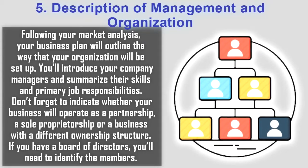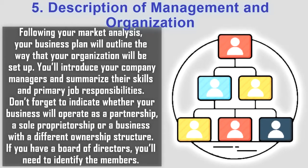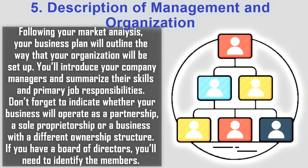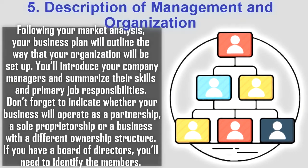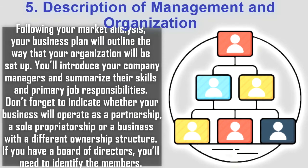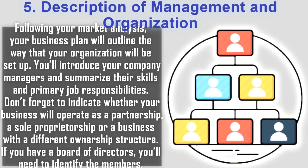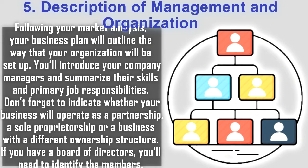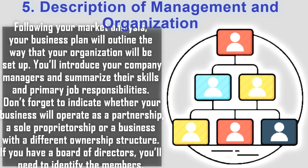Then the fifth element is Description of the Management and Organization. Aakhir aapka management body kya hai? Kaun se founders ya co-founders milke is company ko banate hain? Unki academic, professional credentials aur credibility kya hai? Aapke organization ka legal structure kya hai — kya private limited company hai, general partnership hai, LLP hai, ya phir koi sole proprietorship hai? Aapko apni company ki poori hierarchical structure apne business plan mein mention karni padegi.